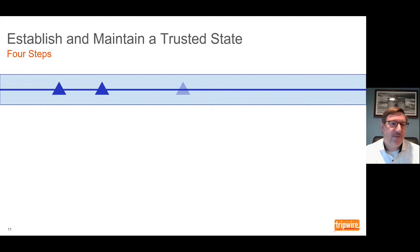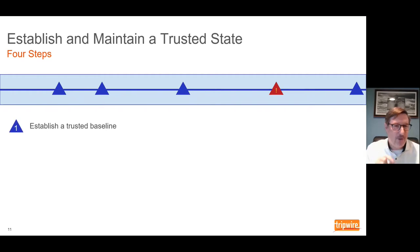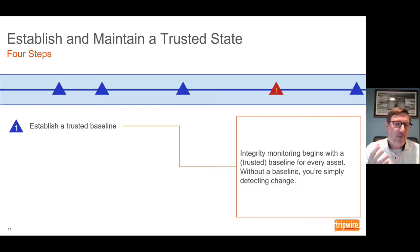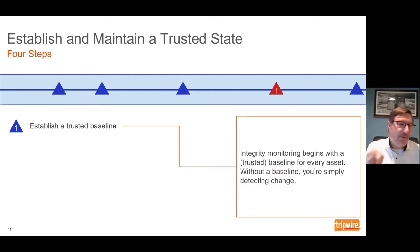Integrity monitoring really has to start by establishing a baseline. I'll talk through the four steps of integrity monitoring; the goal is to establish and maintain a trusted state. That first step is to establish a trusted baseline. When you're performing the process of integrity monitoring, you don't start by detecting changes — you start by understanding the desired state of the assets in your environment. That baseline, ideally a trusted baseline, needs to exist for every asset in order to understand the context of the changes occurring. Without a baseline, you're doing change detection, not integrity monitoring.